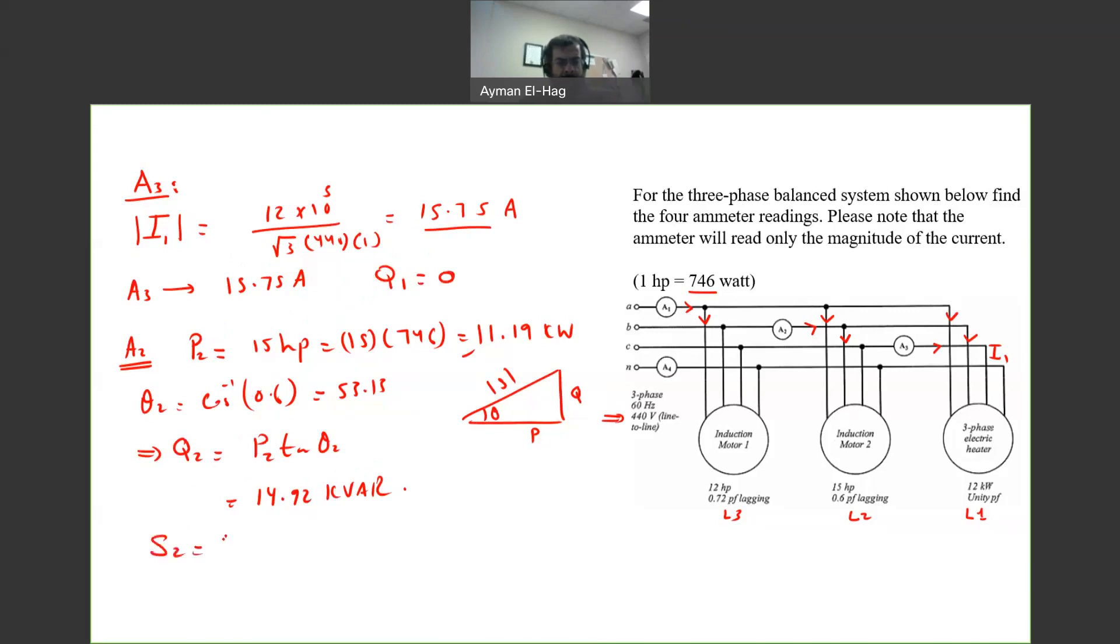Now I will find S2, which is equal to P1 plus P2 plus j(Q1 plus Q2), and this is equal to 23.19 plus j14.92 kVA. This is the complex power.